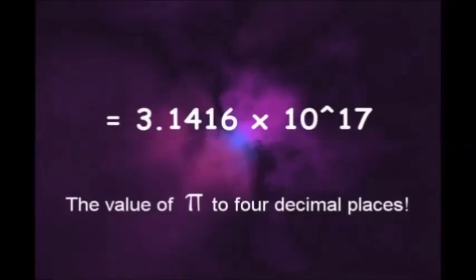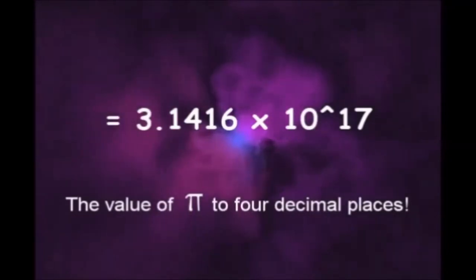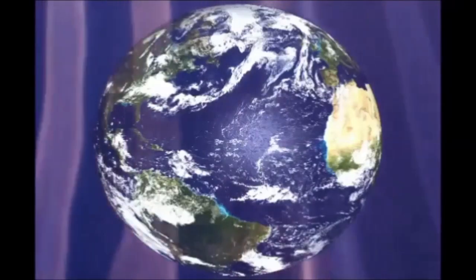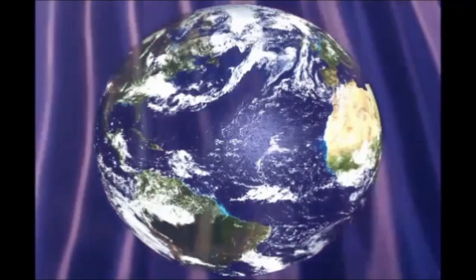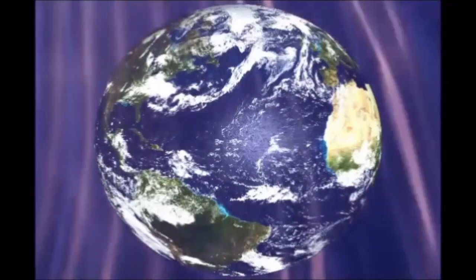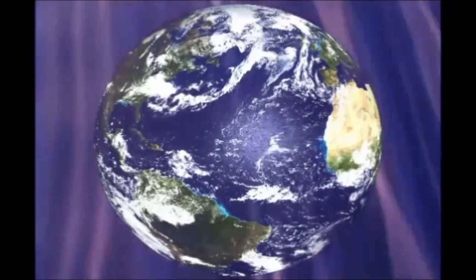That's 3.1416 times 10 to the 17th power. This is the value of pi to four decimal places. Keep in mind that four is the number of creation in biblical numerology. Very interesting in light of the rabbinical tradition that God uses the scriptures as the very template for creation.